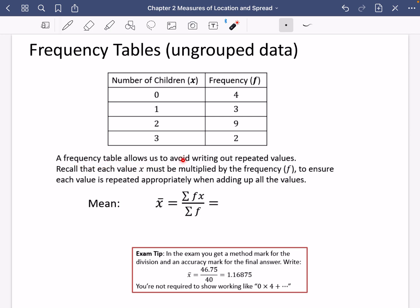So a frequency table allows us to avoid writing out repeated values. What this actually means is we've got four zeros, we've got three ones, we've got nine twos, and we've got two threes.